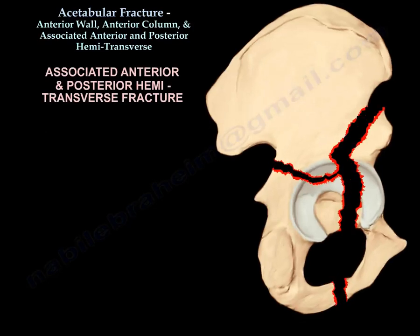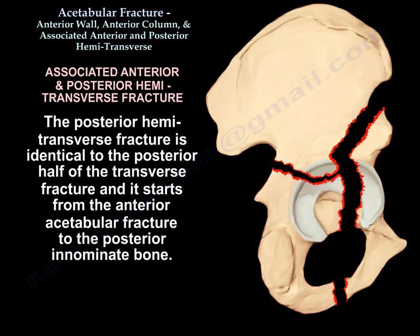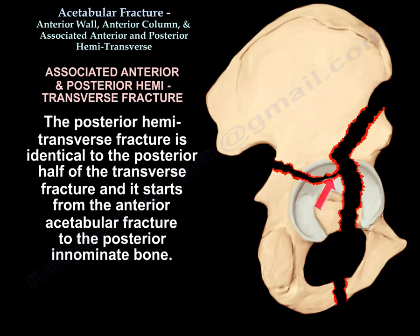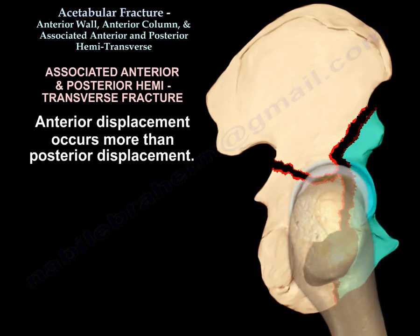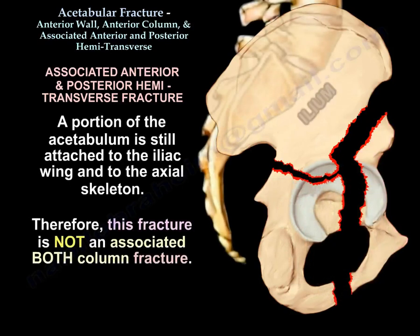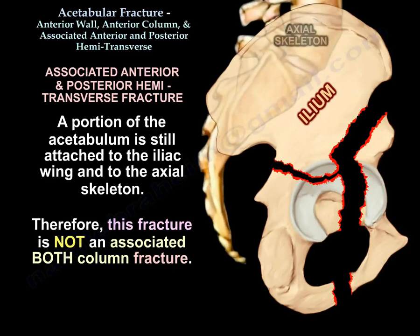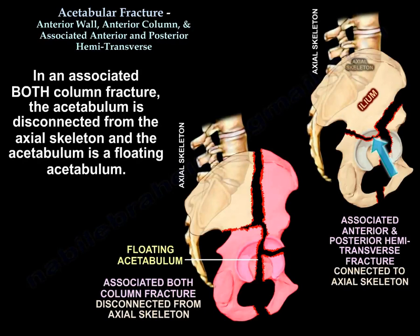Associated anterior and posterior hemitransverse fracture of the acetabulum: the anterior injury can be an anterior column or anterior wall fracture, and the posterior injury is a hemitransverse fracture. The posterior hemitransverse fracture is identical to the posterior half of the transverse fracture, starting from the anterior acetabular fracture to the posterior innominate bone. Anterior displacement occurs more than posterior displacement. The femoral head may be subluxed or dislocated anteriorly. A portion of the acetabulum is still attached to the iliac wing and to the axial skeleton; therefore, this is not an associated both-column fracture. In associated both-column fracture, the acetabulum is disconnected from the axial skeleton — a floating acetabulum.